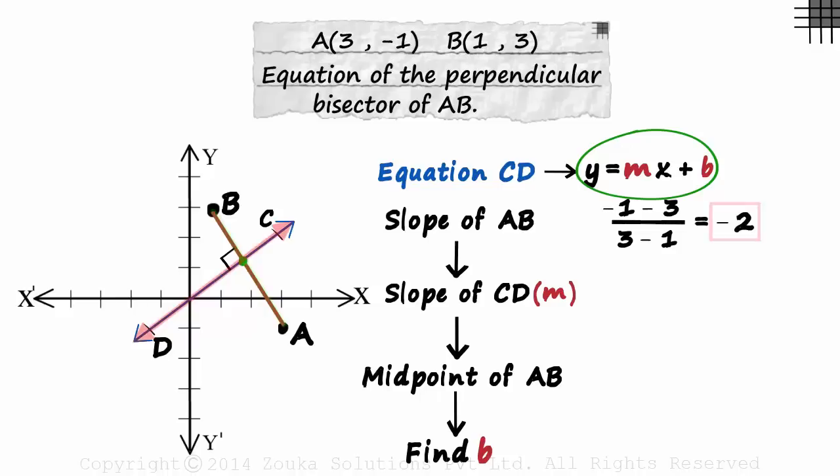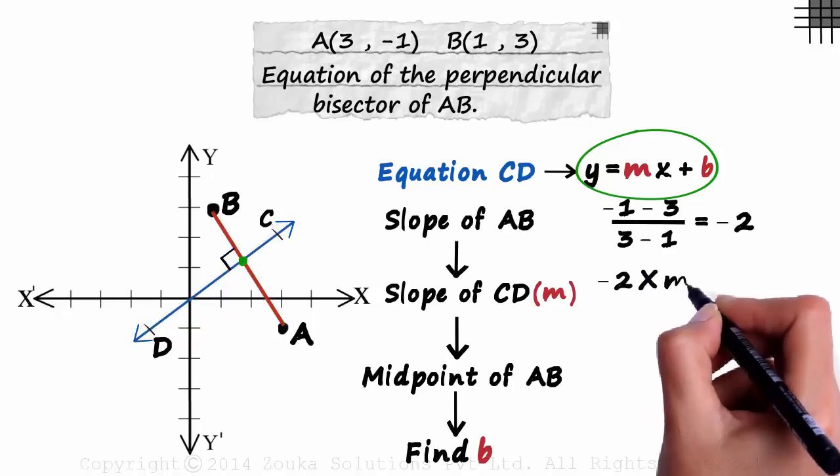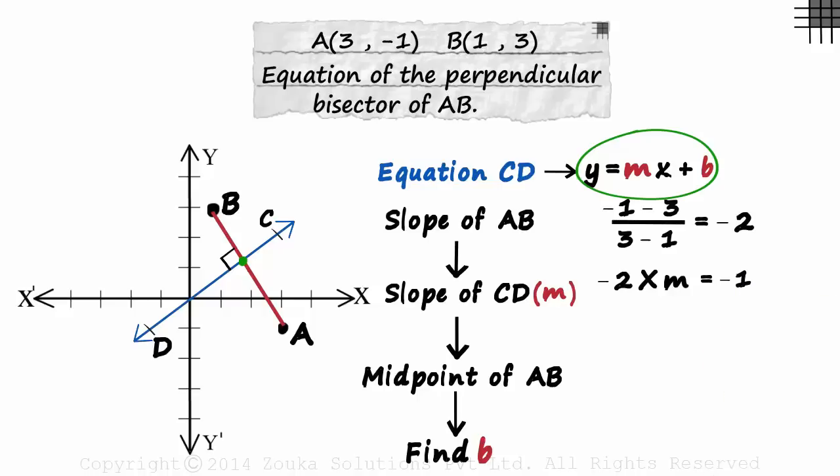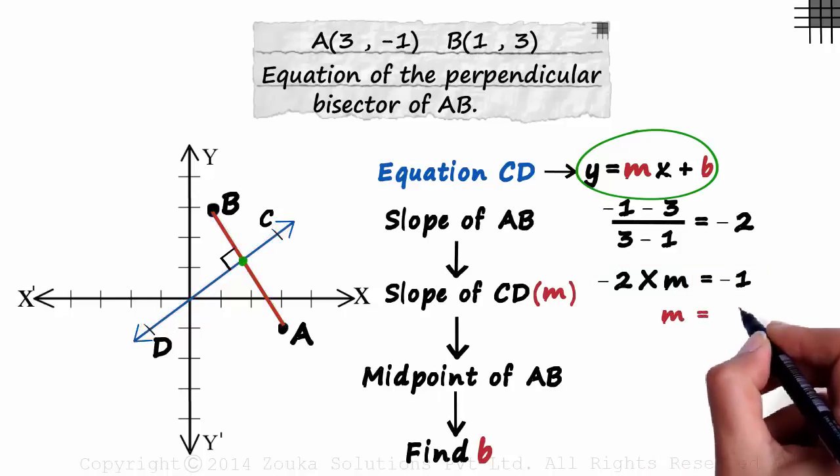Now we find the slope of CD. As AB and CD are perpendicular, the product of their slopes will be minus 1. So minus 2 times M will equal minus 1. Slope of AB times the slope of CD equals minus 1. We get the slope of CD as 1 over 2.